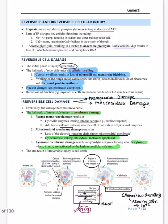To summarize reversible cell injury: decreased ATP, lactic acid accumulation, cellular swelling, and decreased protein synthesis. For irreversible cell damage, you need extensive membrane damage or mitochondrial damage. During mitochondrial damage, cytochrome C leaks out and combines with APAF-1, which will be demonstrated further. Plasma membrane damage and mitochondrial damage are the hallmarks.